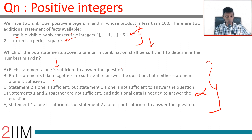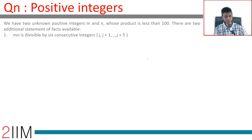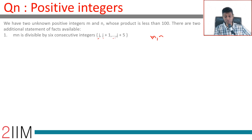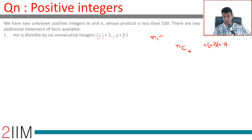Look at statement 1 without thinking about statement 2. Can we find m and n using this? m×n is divisible by the product of six consecutive integers — say j, j+1, j+2, all the way to j+5. Think about nC6: it equals n×(n−1)×(n−2)×...×(n−5) divided by 1×2×3×...×6, and this is always an integer.